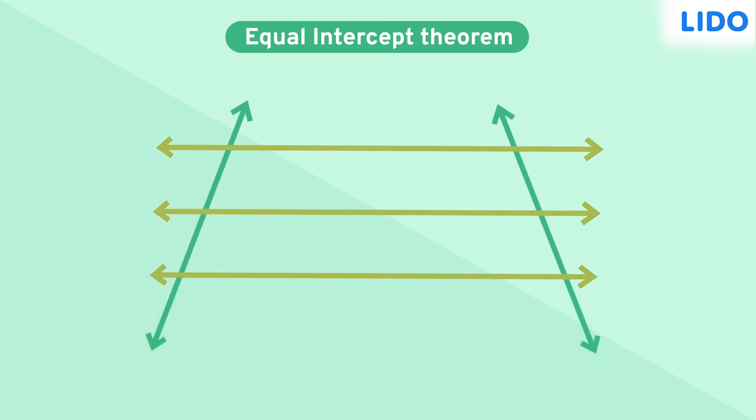Three parallel lines are intersected by two transversals AB and CD. Also, the three parallel lines make equal intercepts PQ and QR on transversal AB. It is to be proved that equal intercepts are made on transversal CD, i.e. LM and MN are equal.